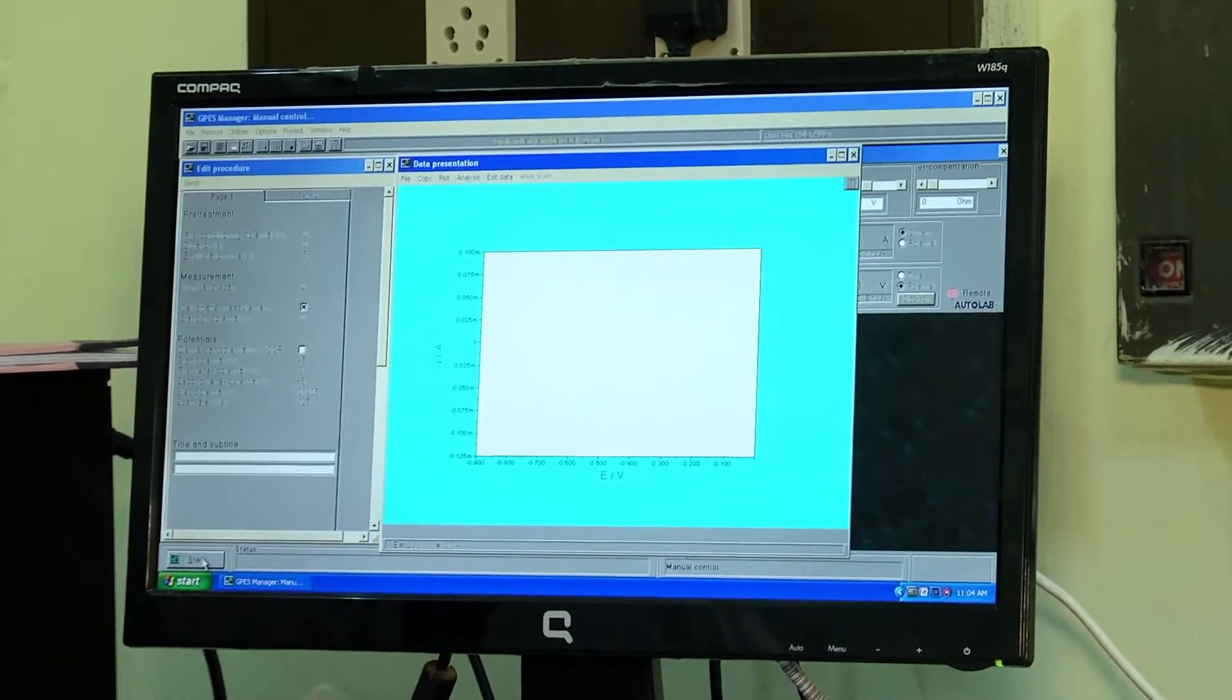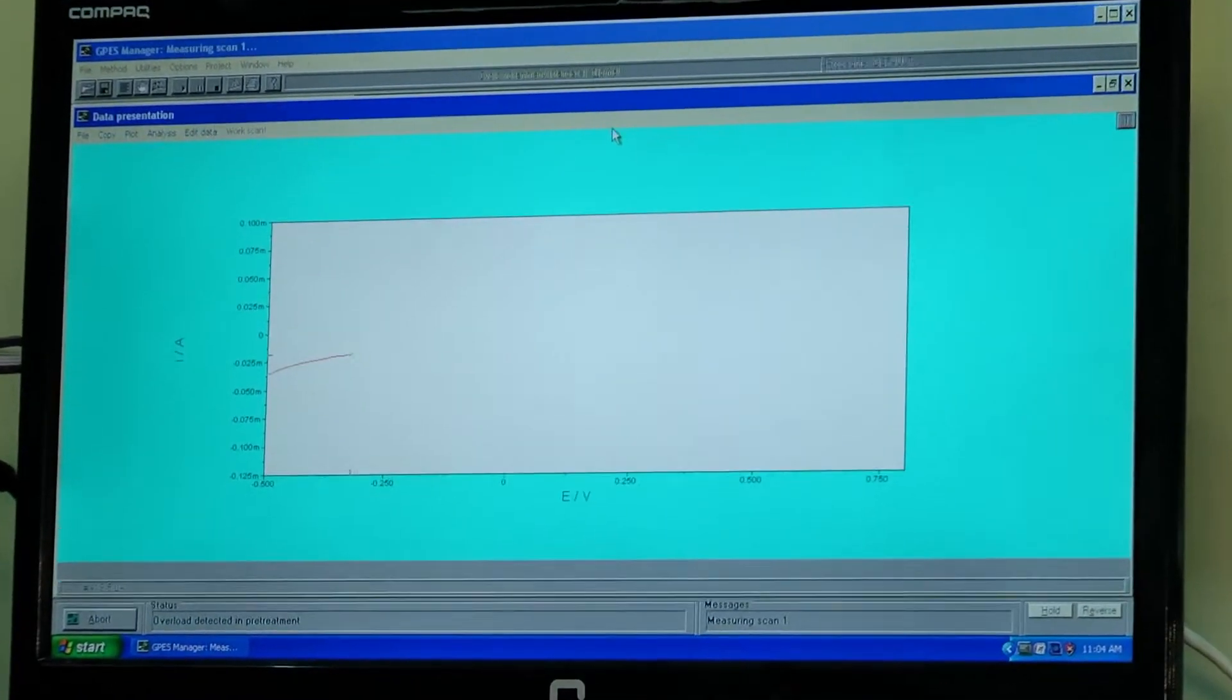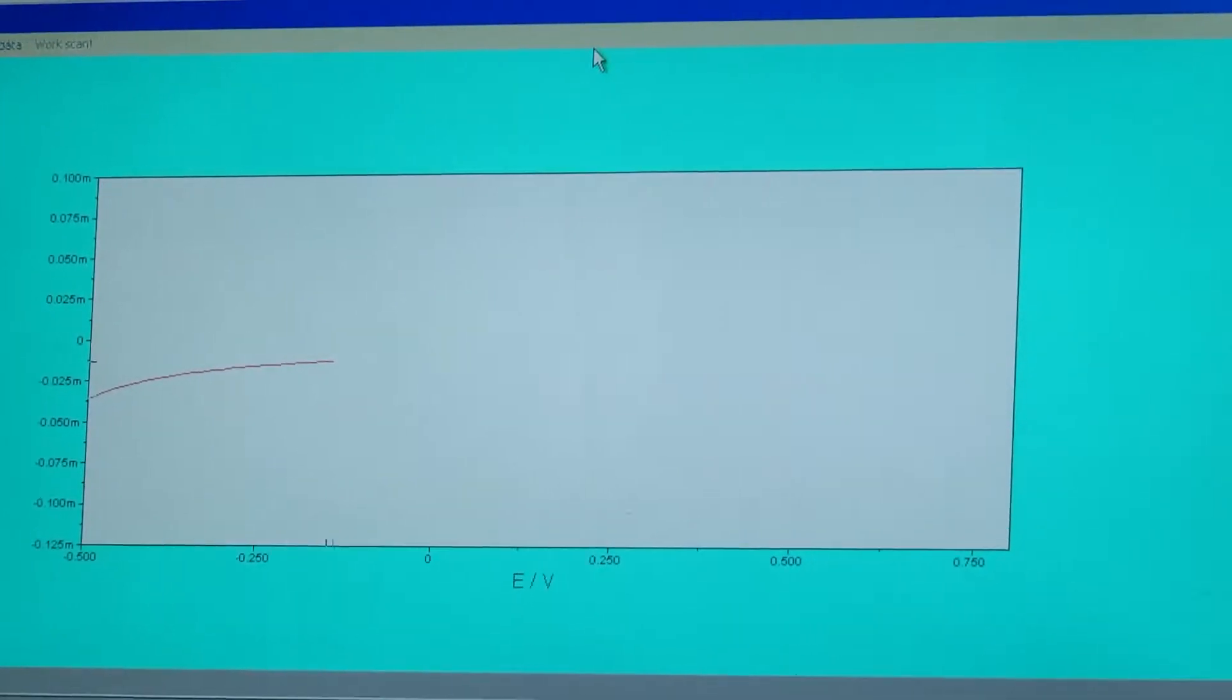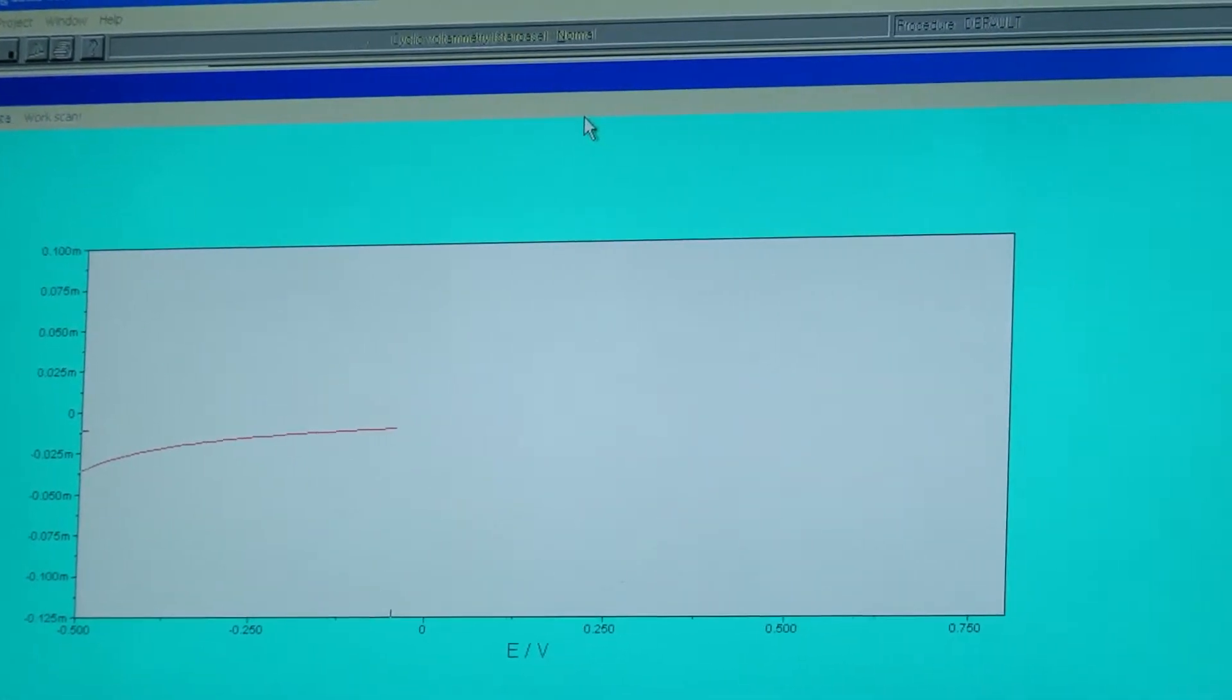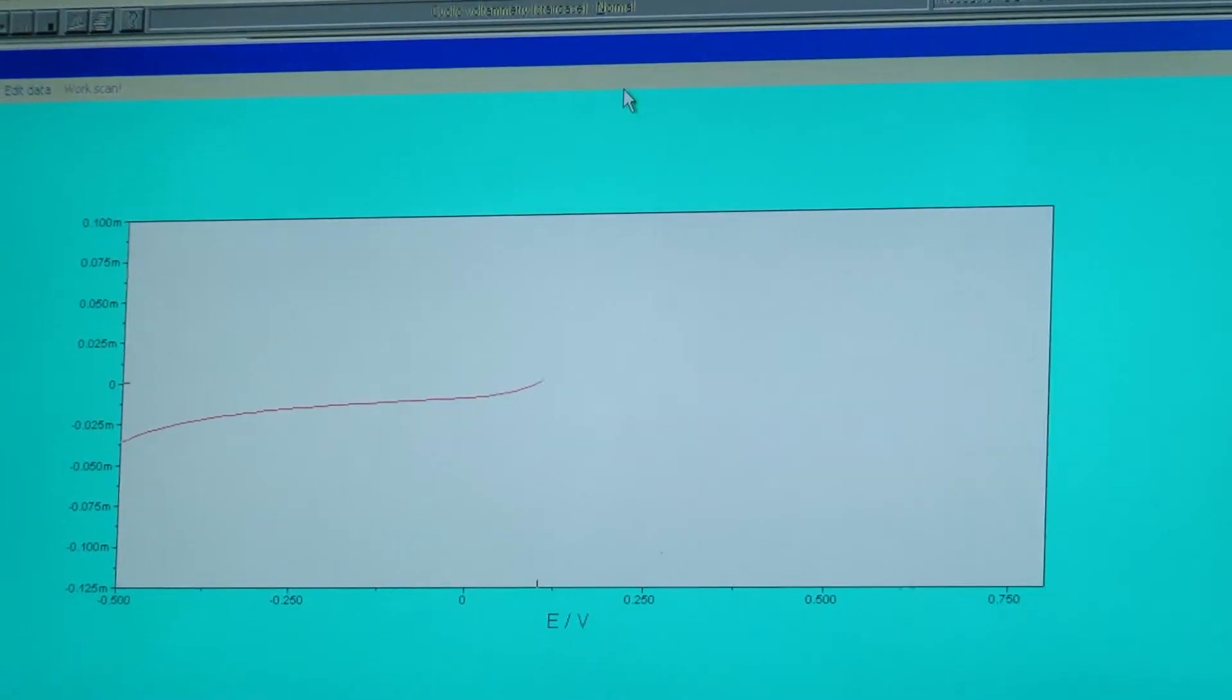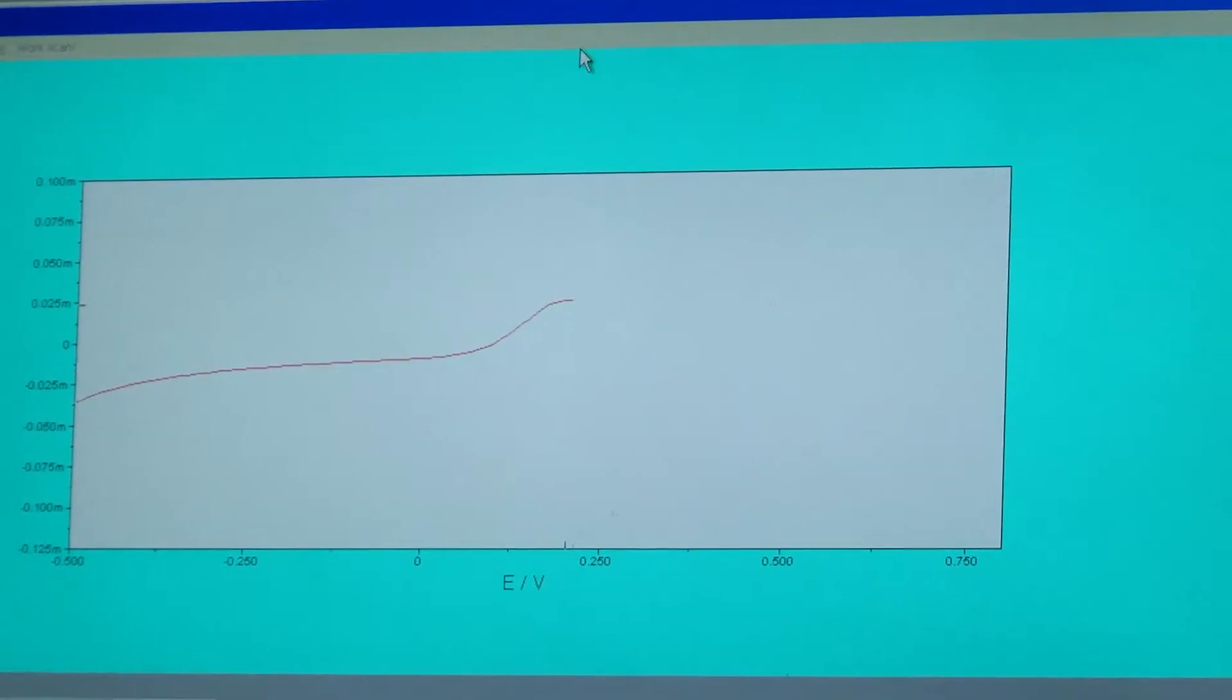A pre-programmed GPES software is used for this study. As you can see, initially it starts with a non-faradic background current, and then after 0.1 volt the current starts to increase due to the redox reaction.